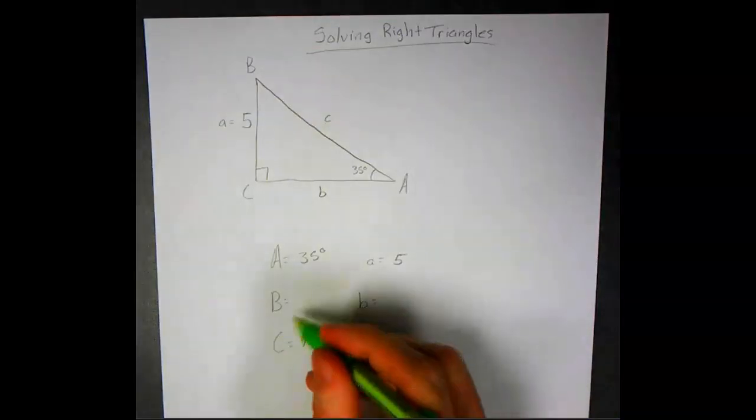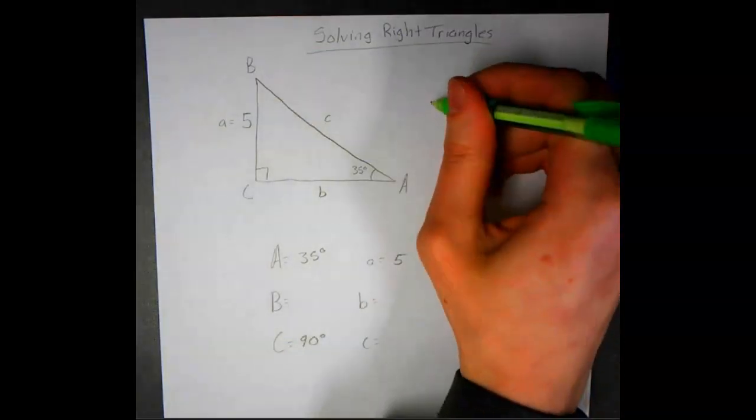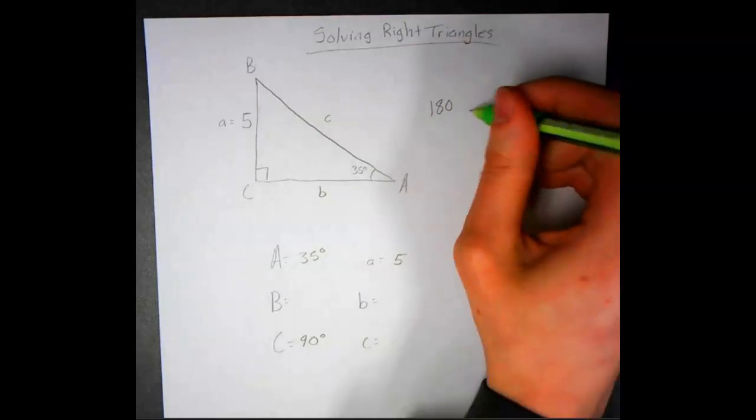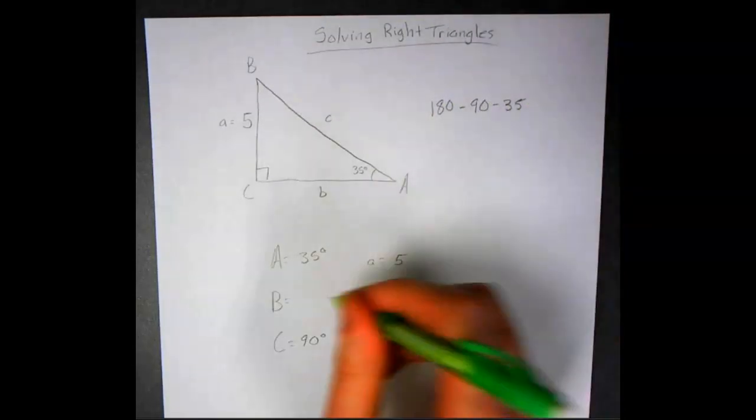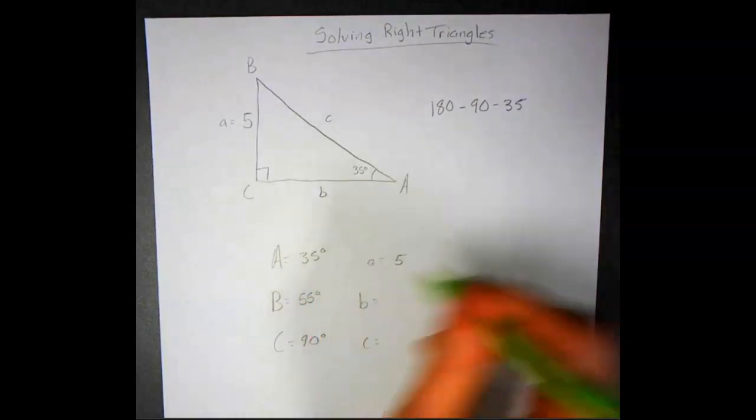When we're looking for angle B, we know that triangles have to equal 180 degrees, so we'll subtract 90 and we'll subtract 35, and we'll end up with 55 degrees.